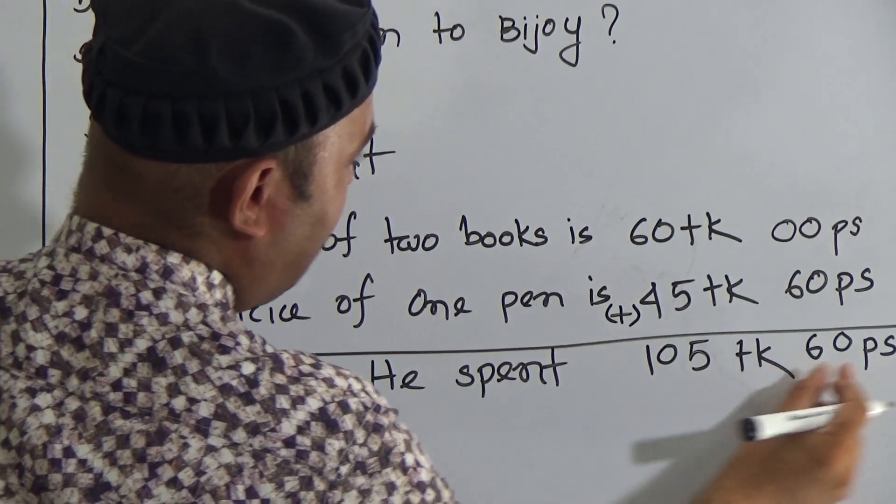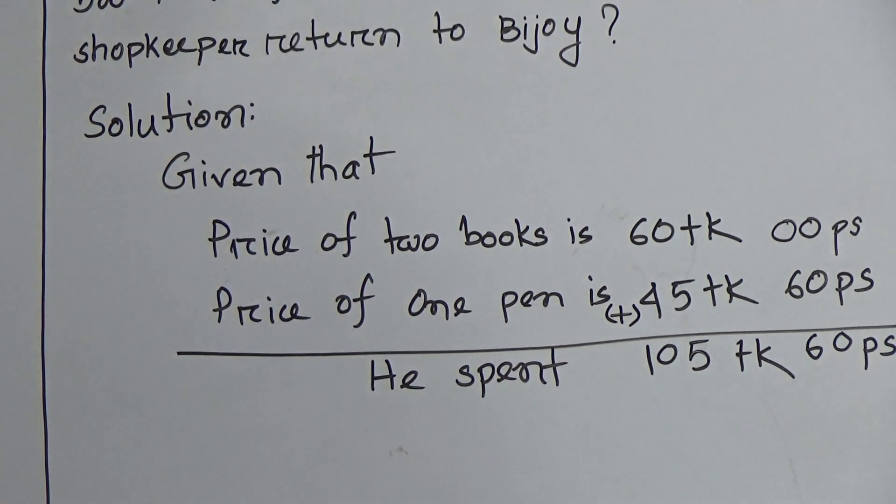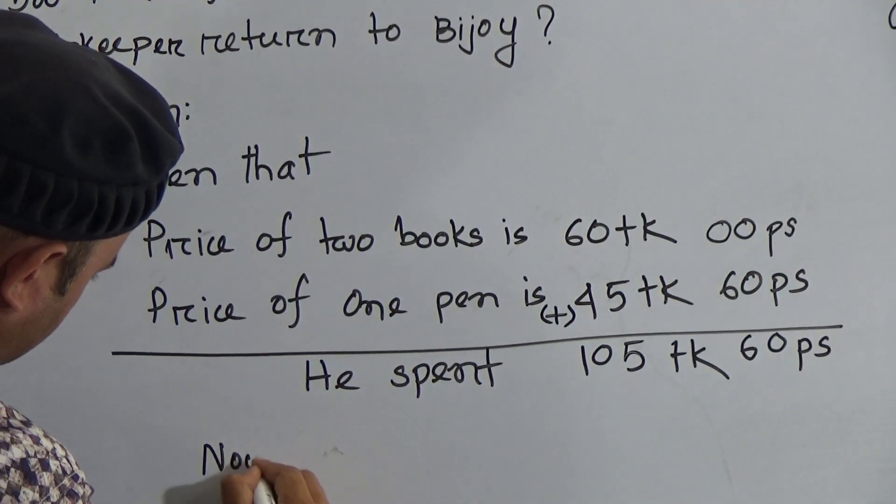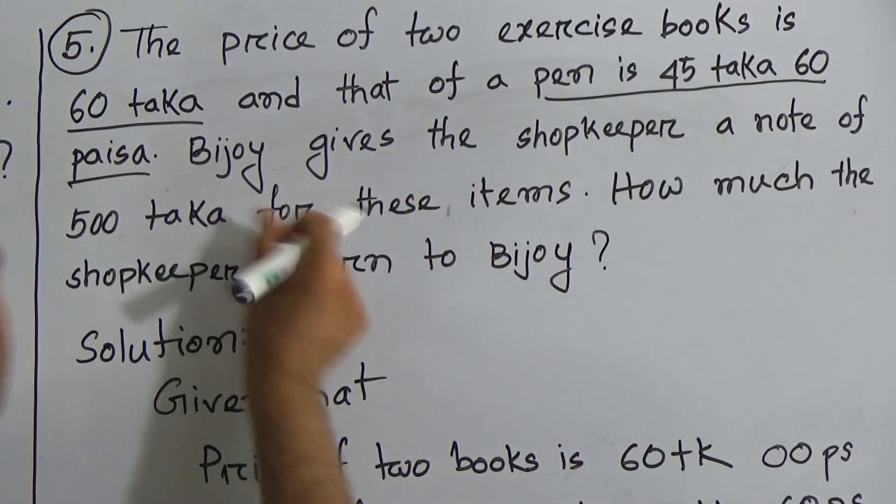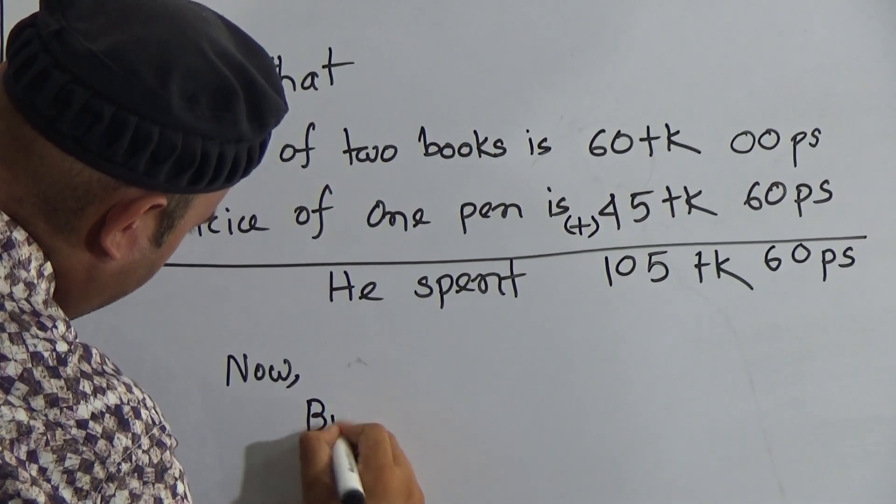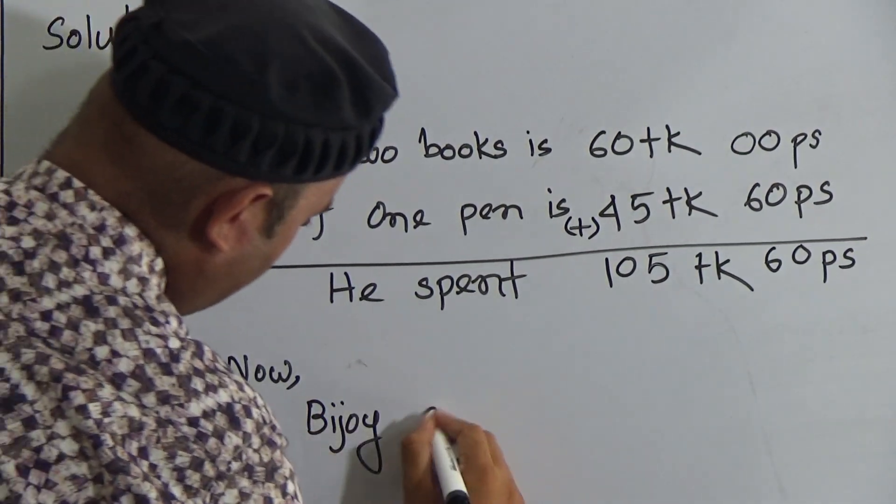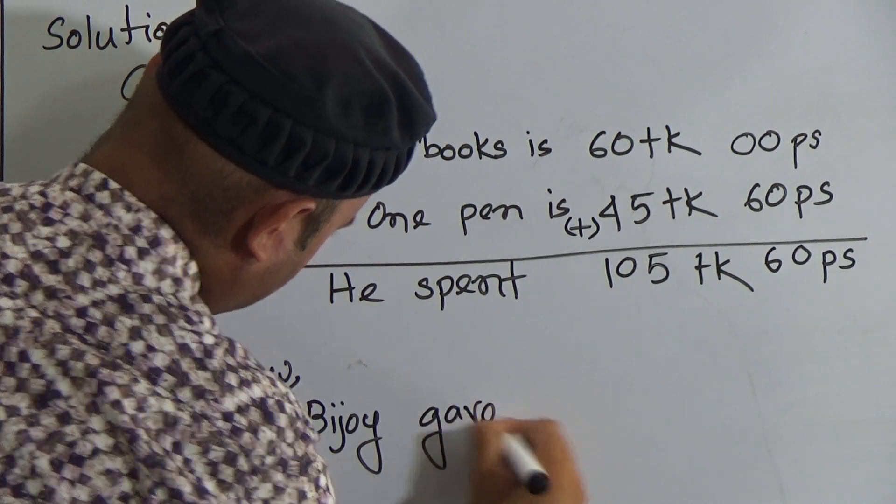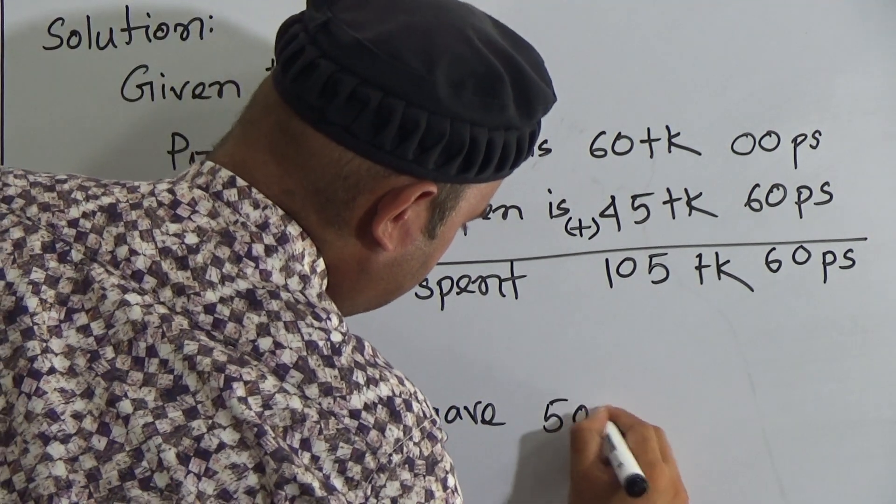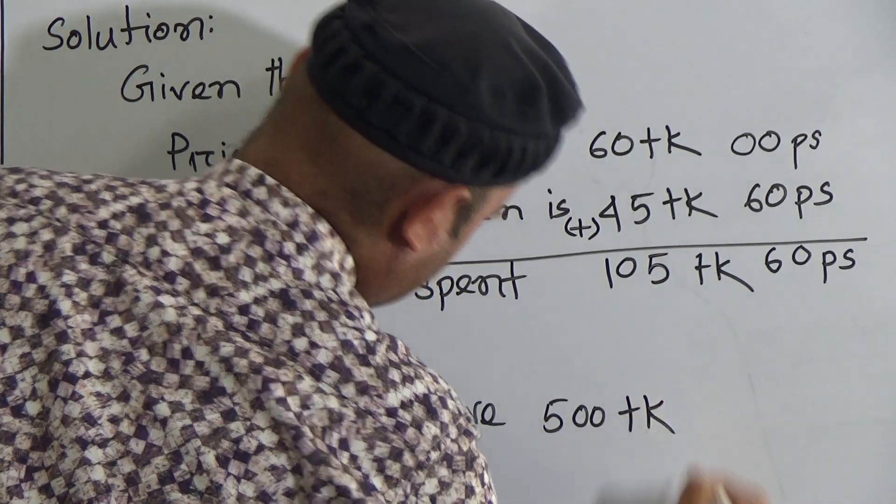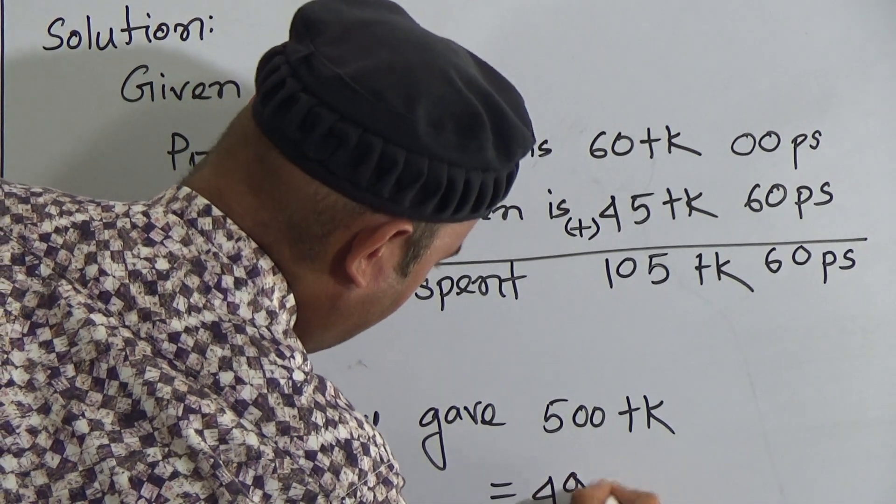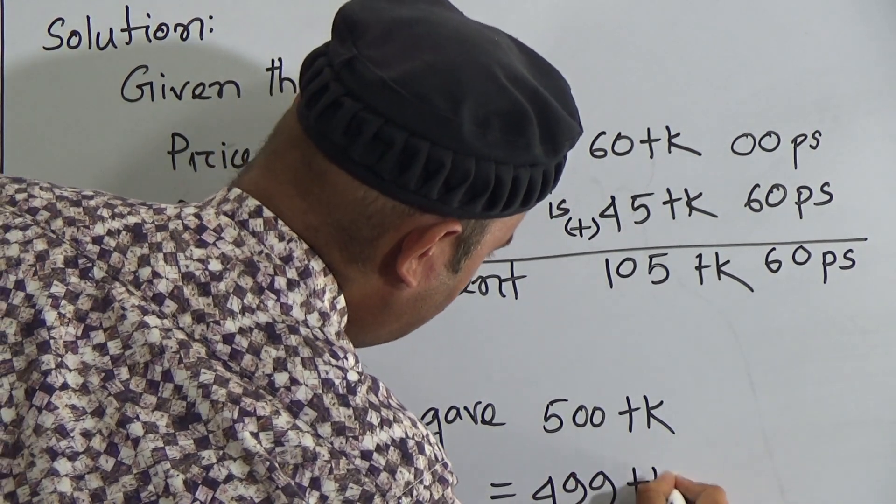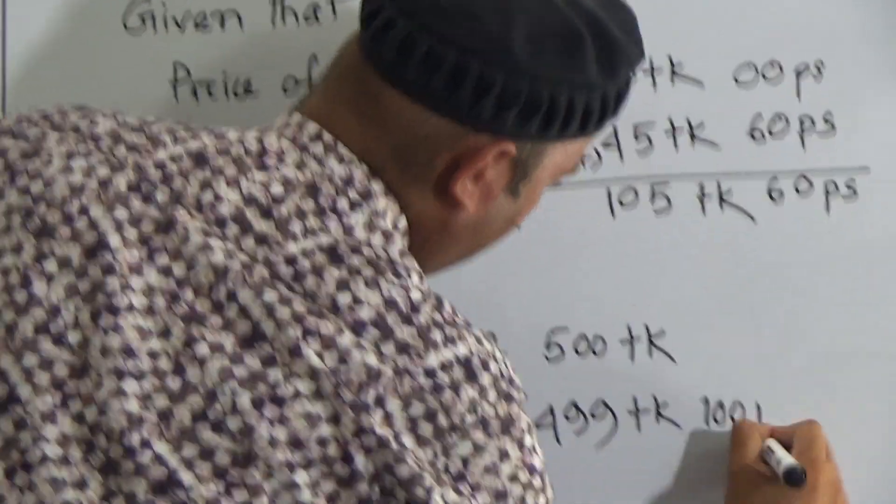Now here is 5 plus 0 is 5, 4 plus 6 is 10, so he has spent 105 taka and 60 poises. Now look here in the second part, Bijoy gave the shopkeeper a note of 500 taka, so we can write here Bijoy gave 500 taka.